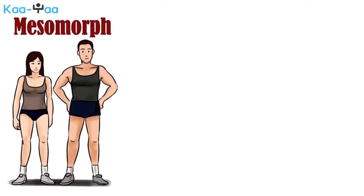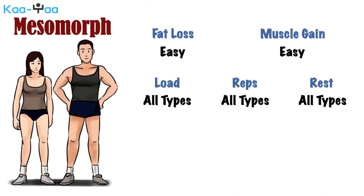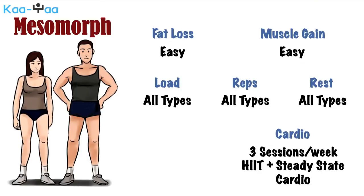A mesomorph has won the genetic lottery for building an athletic physique. It is relatively easy for them to gain muscle and lose fat. This however does not mean that they can take it easy — building a good physique needs hard work and discipline, and even a mesomorph cannot get results without it. A mesomorph needs a good balance of muscle gain and fat loss to optimize results. Hence, a mesomorph should try out all kinds of workouts with low reps and heavy weights, or high reps and light weights. Similarly, for cardiovascular training, a combination of HIIT and steady-state cardio may be included.